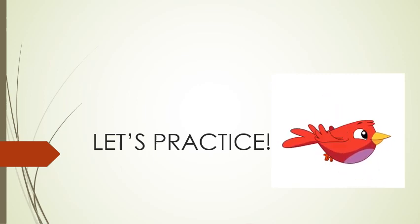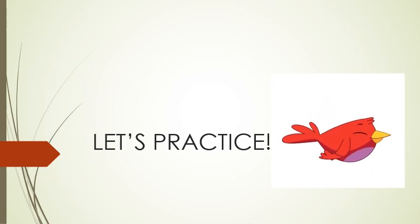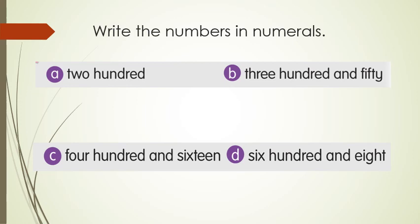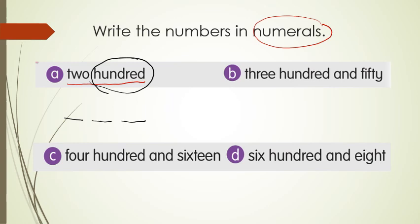Now let's see some examples and do them together. The question is: write numbers in numerals. Numerals means in numbers. Look at the first example: two hundred. How to write two hundred? Make it a three-digit number. So: two, zero, zero — that is 200. No other words, so just two hundred.